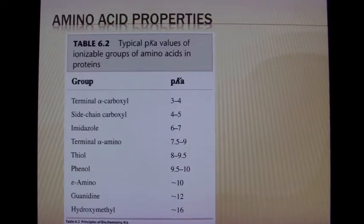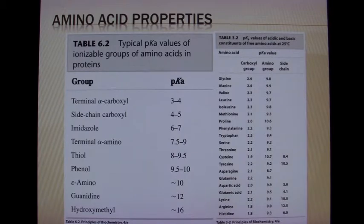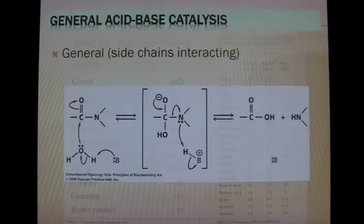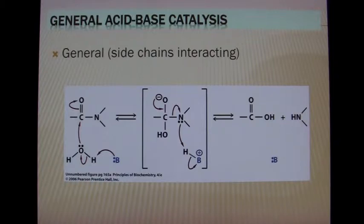Here we see a little bit more about amino acids and some of their different acidic capabilities. The lower the pKa, the more acidic. And here we see how some of the side chains range from very basic to very acidic as well. These interactions are notable — right here with the general side chains interacting to show another acid-base catalysis.